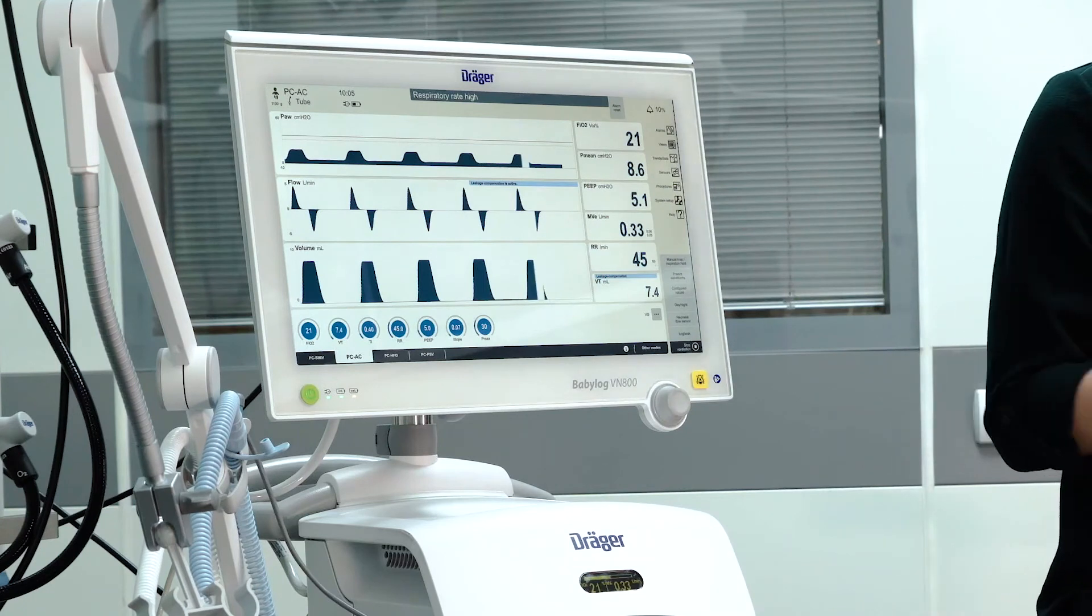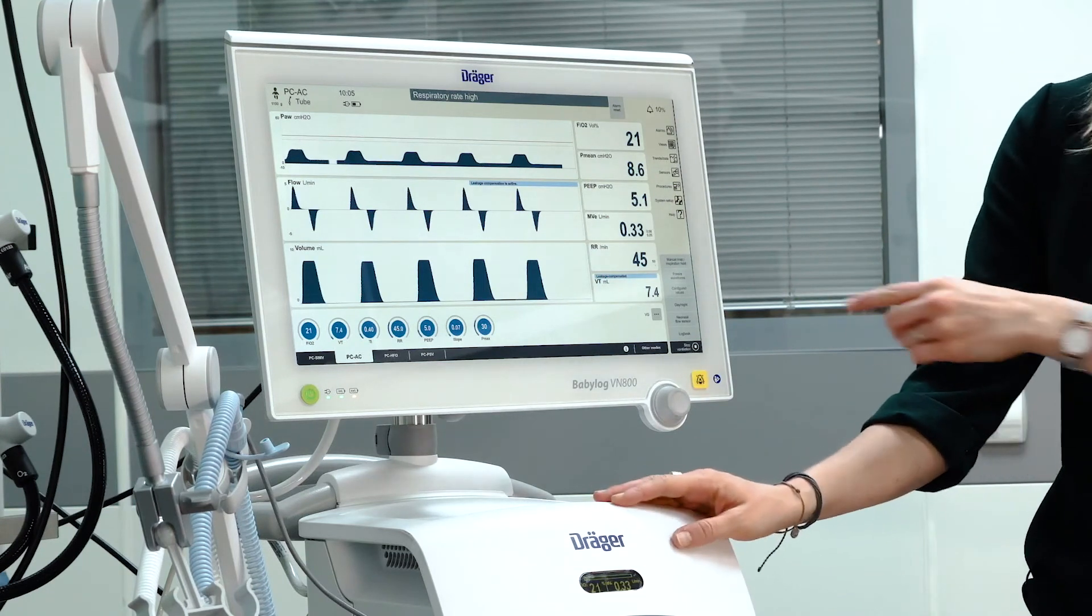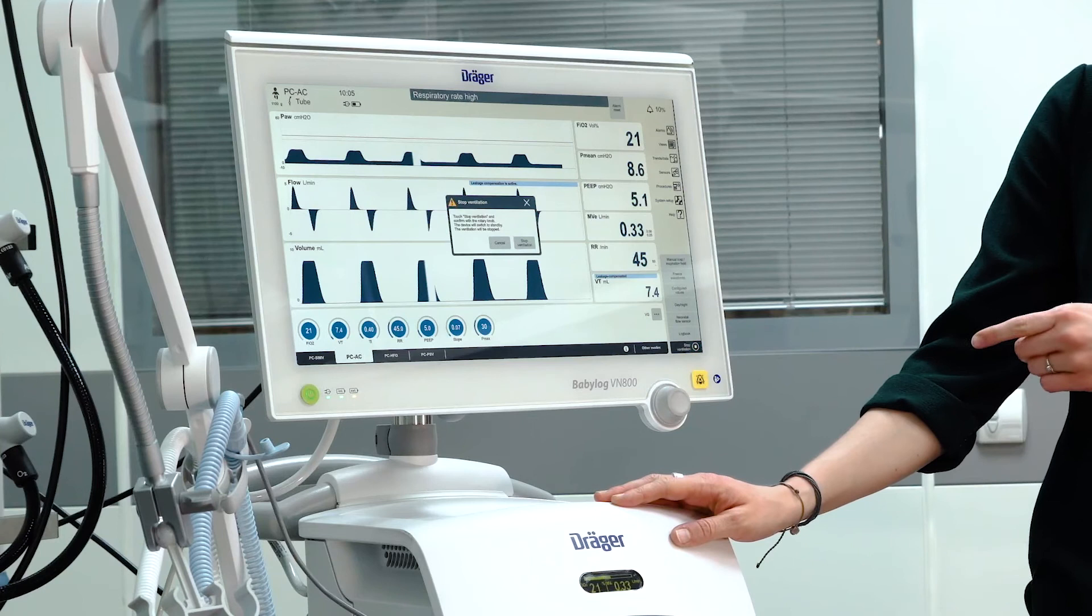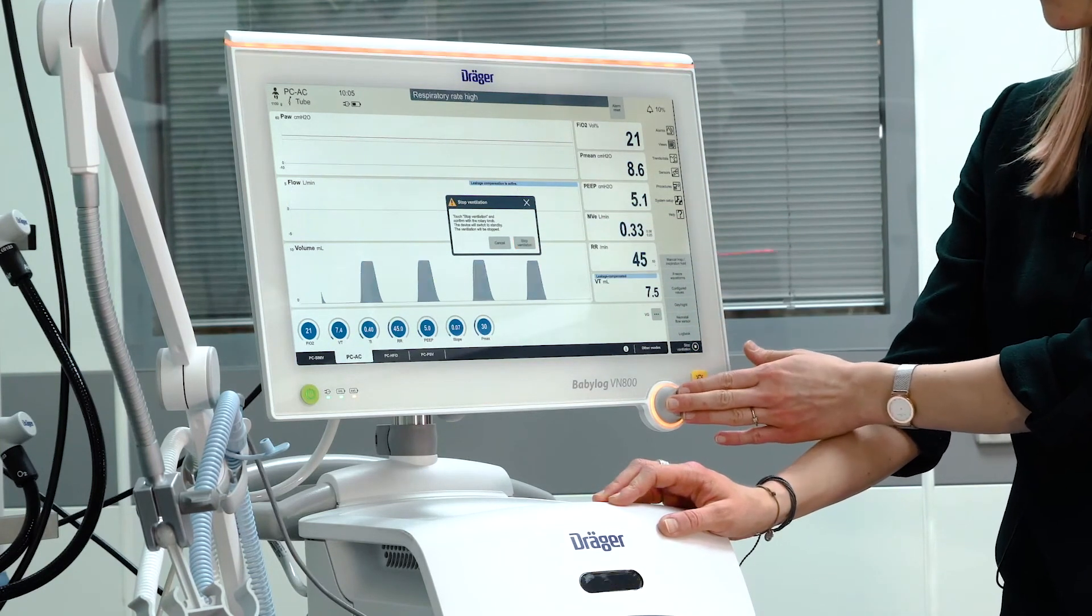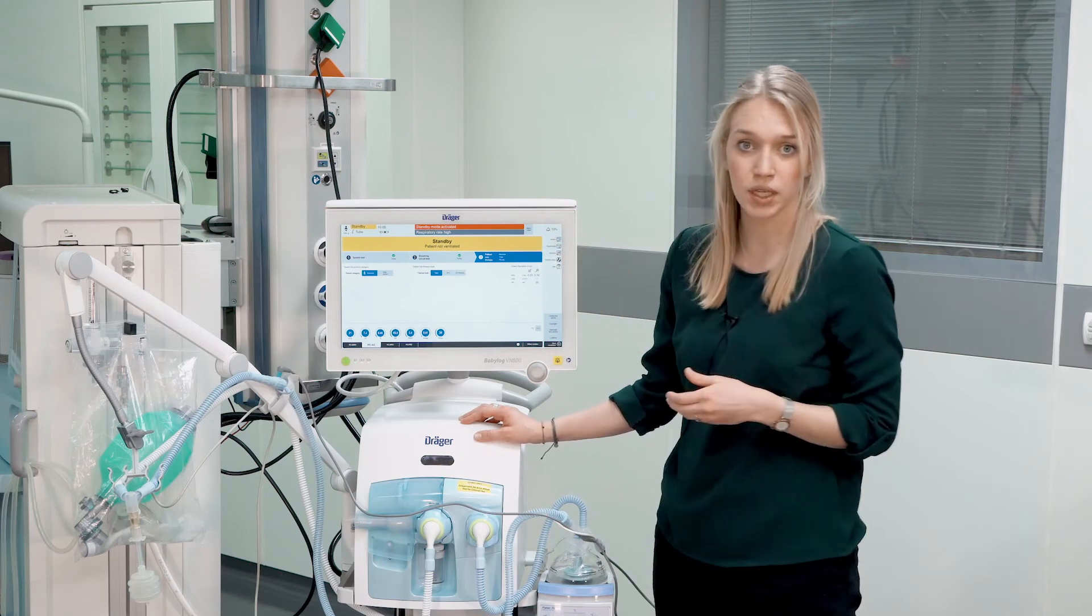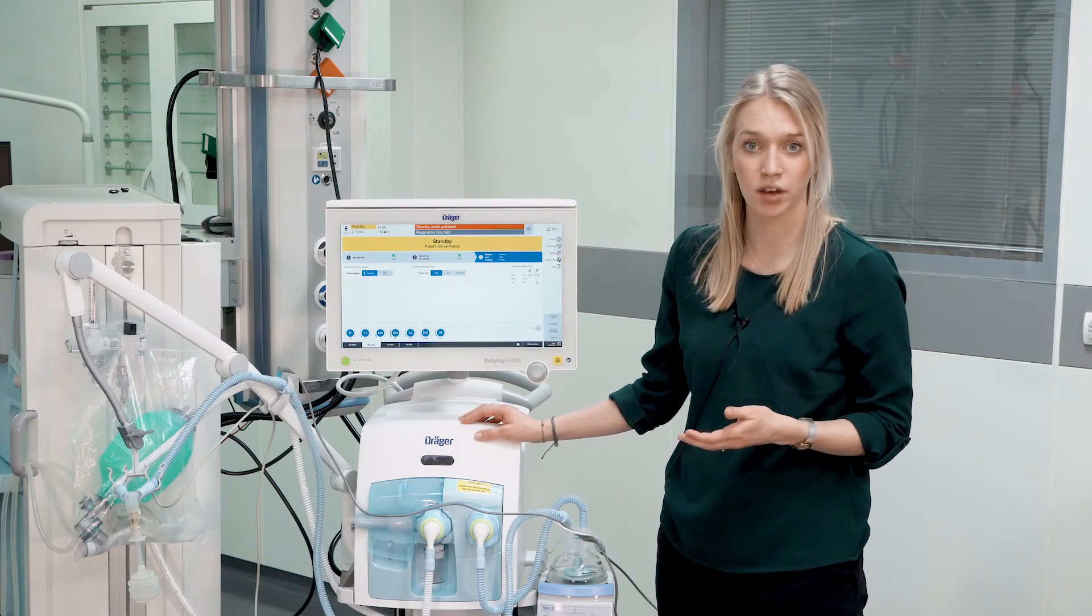If you want to end ventilation therapy in general, press on stop ventilation and confirm by pressing the rotary knob. The red alarm will indicate that the patient is now no longer ventilated.